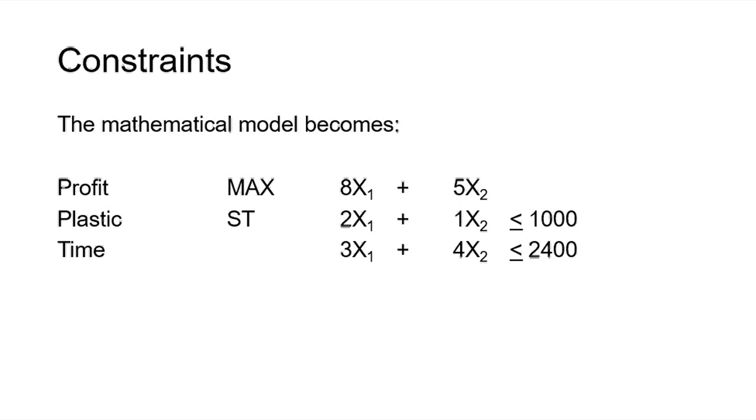Next, there's a time constraint. We had 40 hours to produce these models per week but it takes 3 minutes to produce a dozen Space Rays, 3x₁ and 4 minutes to produce a dozen Zappers, 4x₂. We have 40 hours of production time which is 2,400 minutes. 40 hours times 60 minutes per hour is 2,400. And we need to keep all the measurements consistent. So if the constraint is in hours, the total time has to be in hours but since the constraint is in minutes, the total time we have has to be in minutes.